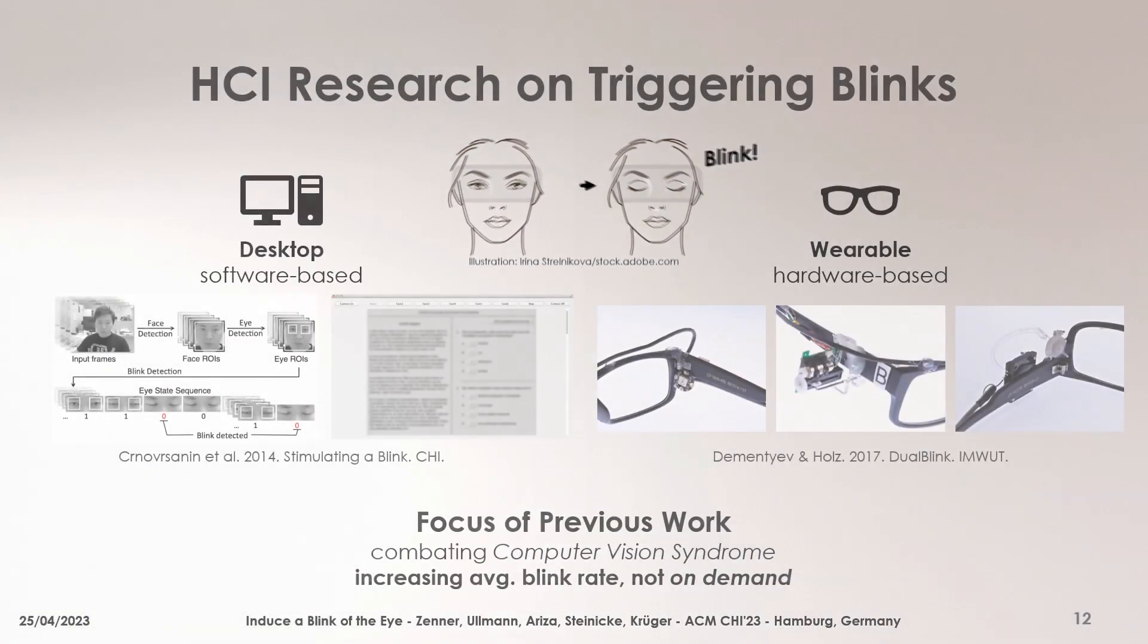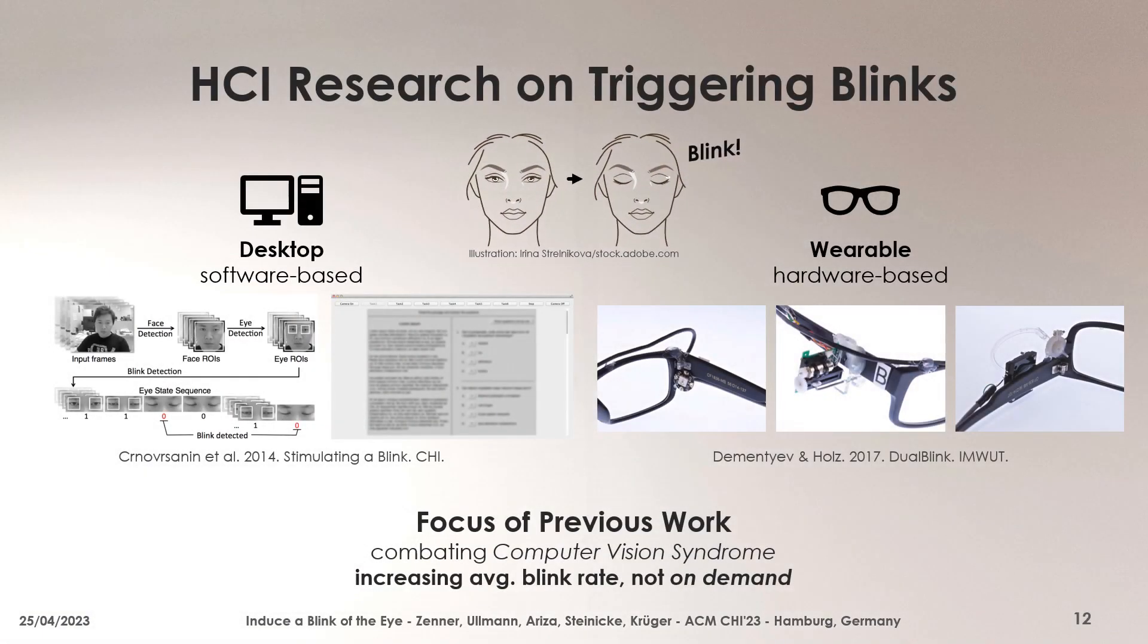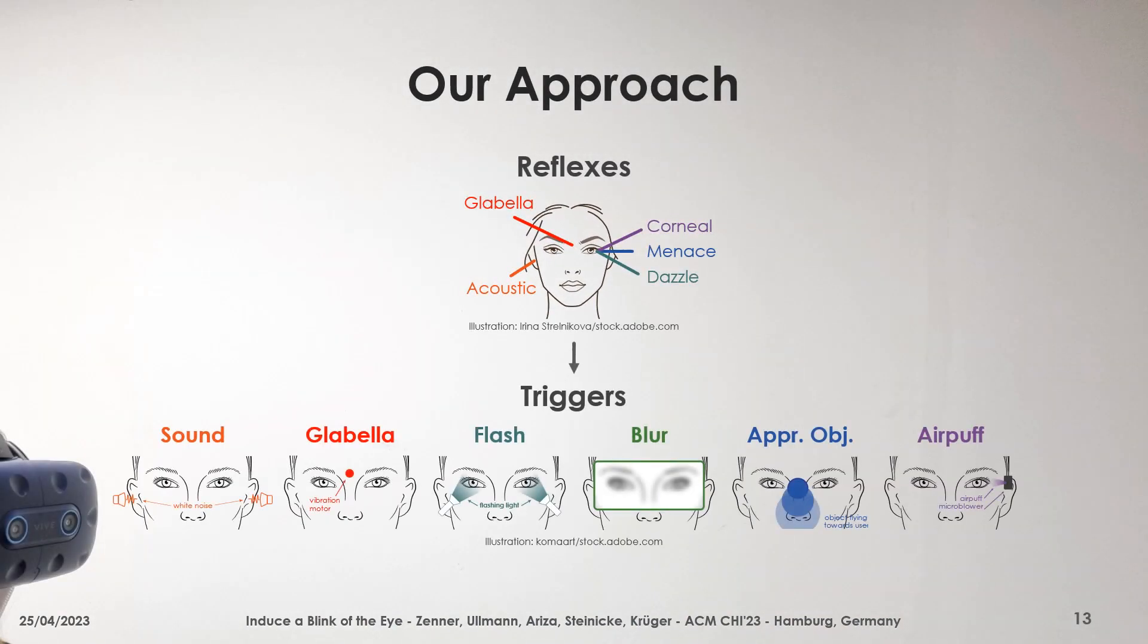Looking at the related literature, triggering blinking is not an entirely new topic. Two previous works have studied software and hardware-based techniques to trigger blinks in desktop and variable setups, but no work has yet considered the use case of virtual reality. Previous systems were designed to combat the computer vision syndrome and thus focused on increasing the user's average blink frequency over time with relaxed time constraints. To investigate on-demand blink triggering in virtual reality, in this paper, we built upon the findings of previous research and transferred established triggering techniques to the domain of virtual reality, while also proposing a novel trigger method.